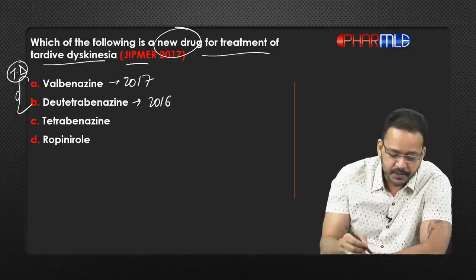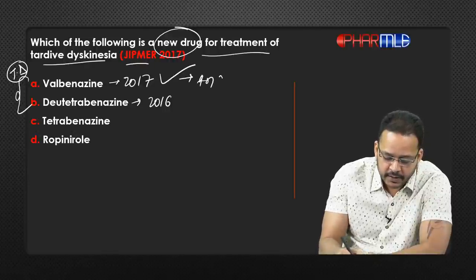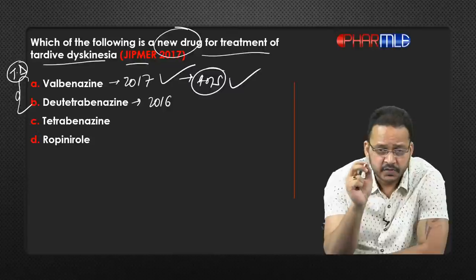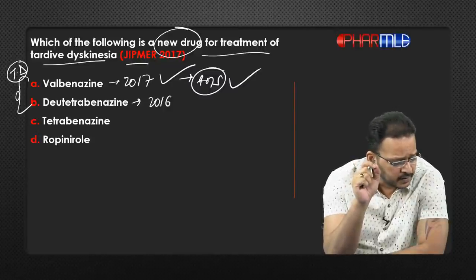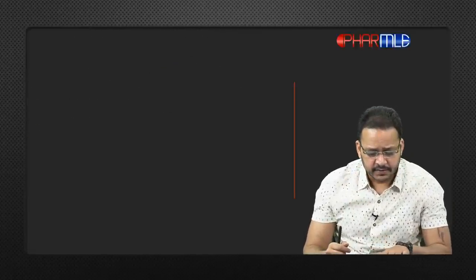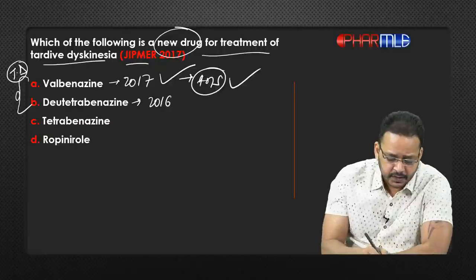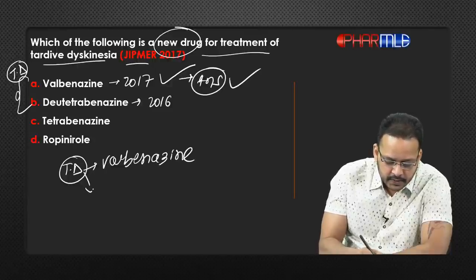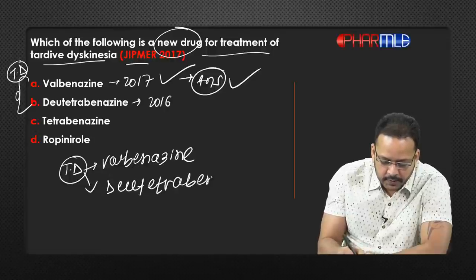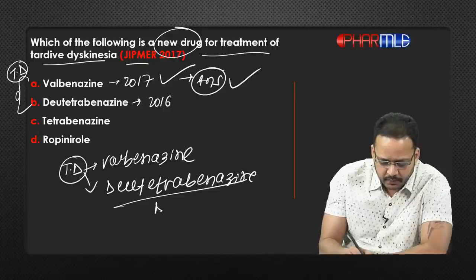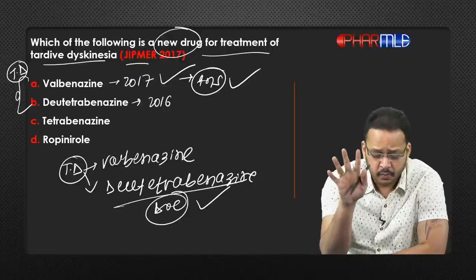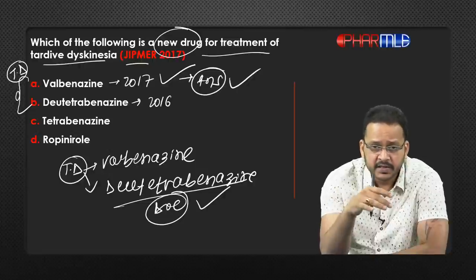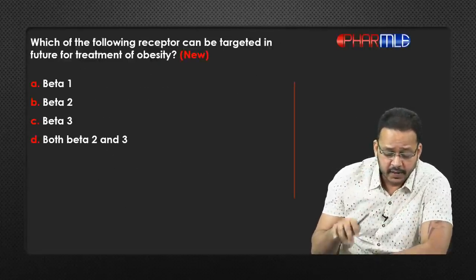The answer is valbenazine — Option A is the best answer. In tardive dyskinesia, we can use both valbenazine and deutetrabenazine. The first approved was valbenazine, then deutetrabenazine. We do not have any other drug. I will discuss tardive dyskinesia in detail when I come to CNS.